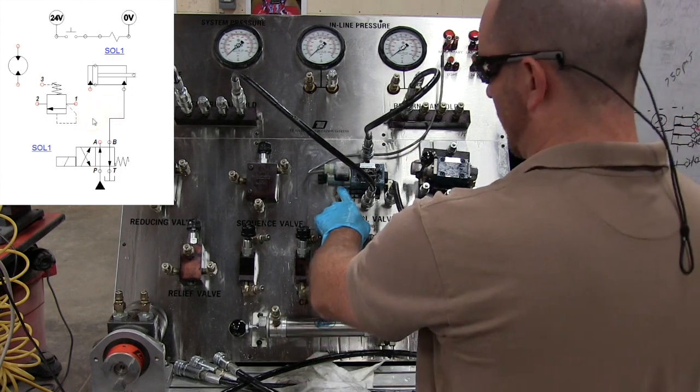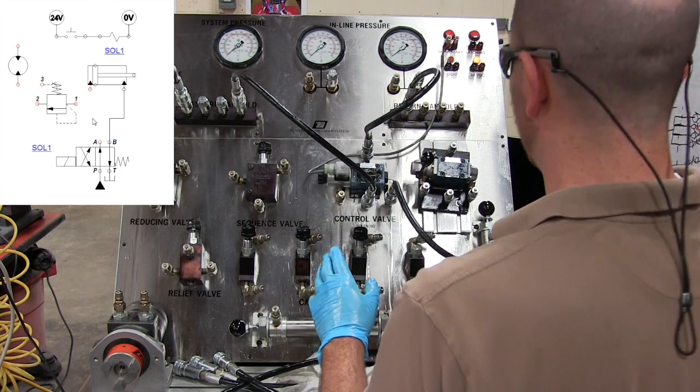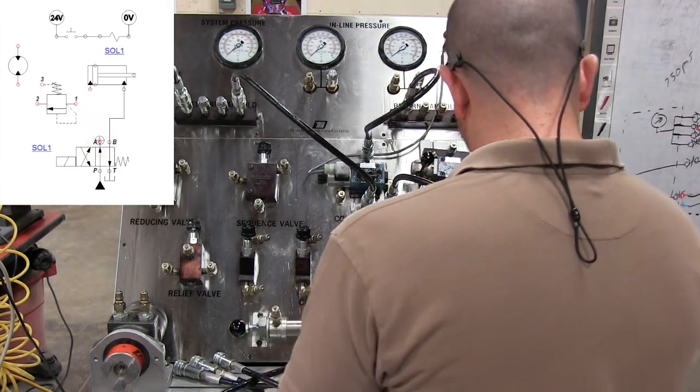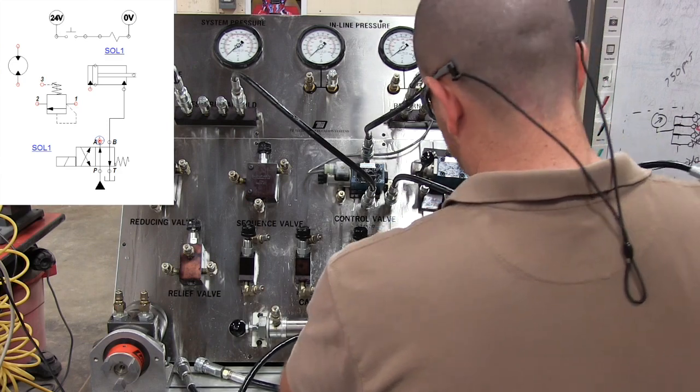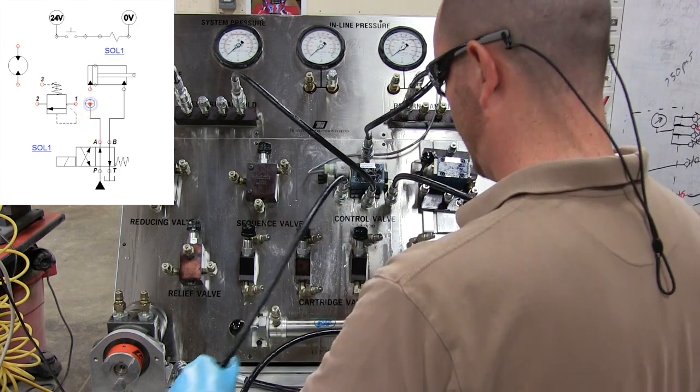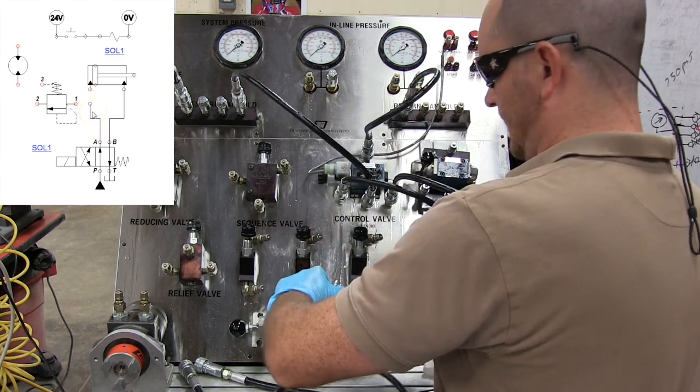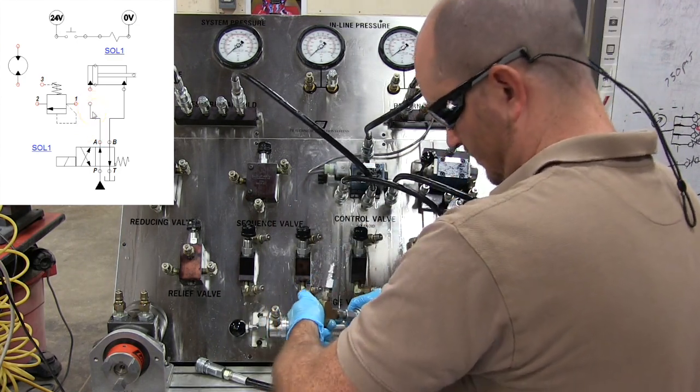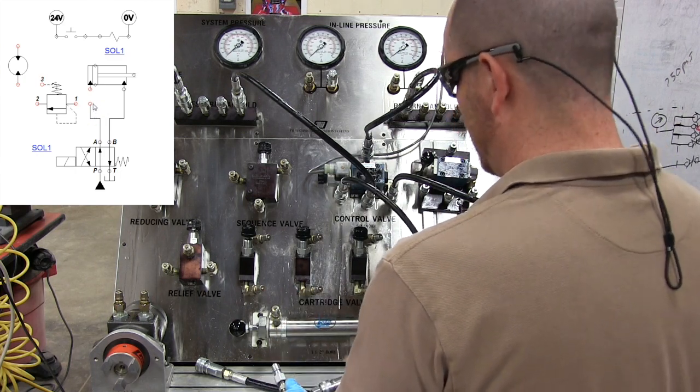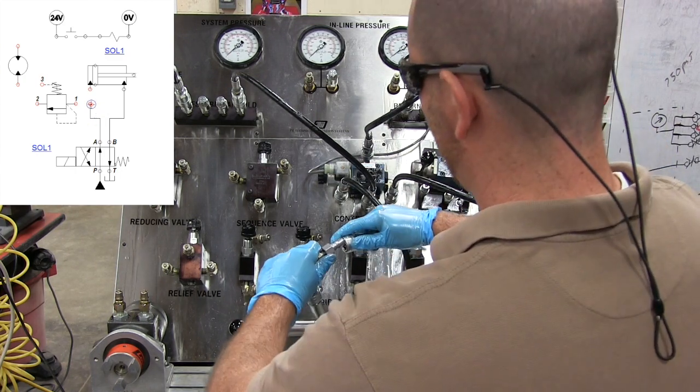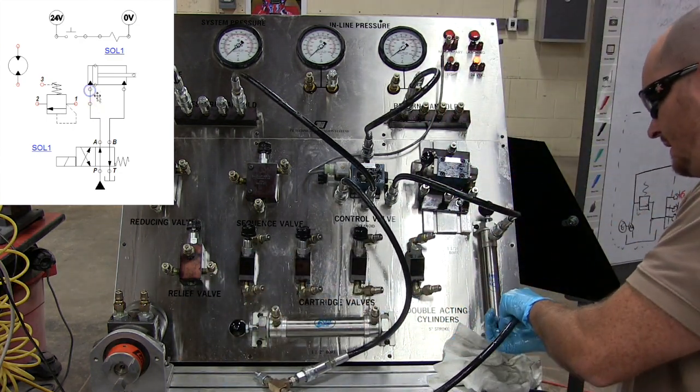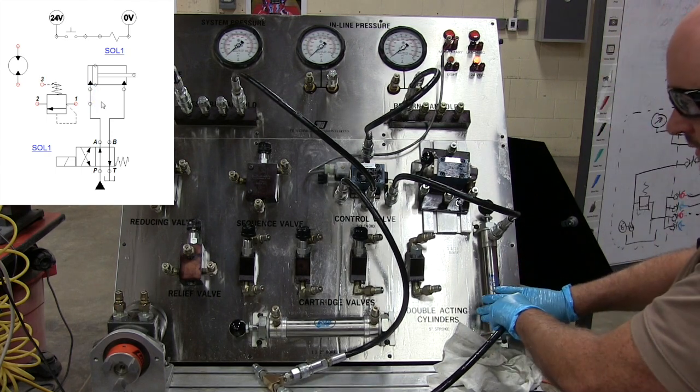From our A port, what we're going to do is go to a T. We're going to grab a T and go from our A port into our T. From that T, we're going to make two connections. One is going to go to the blind end port on our hydraulic cylinder.